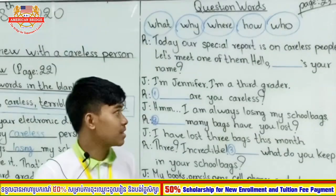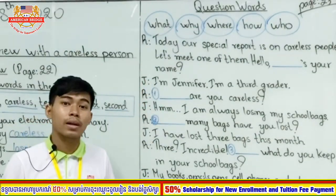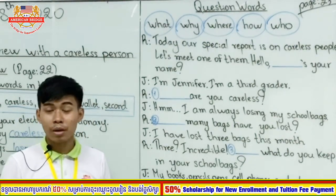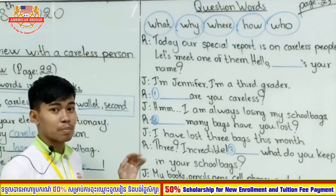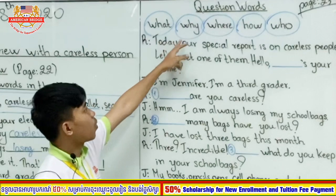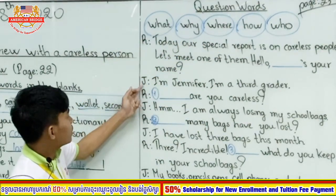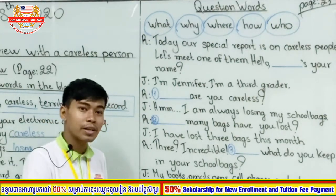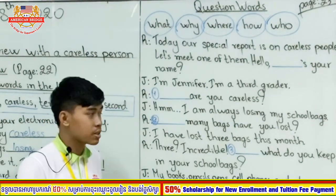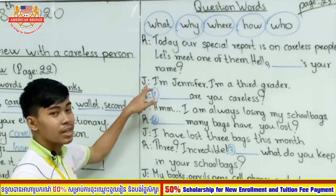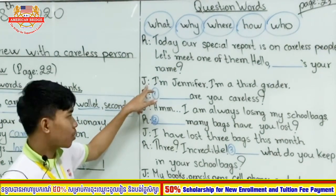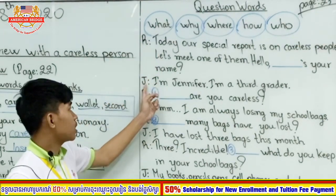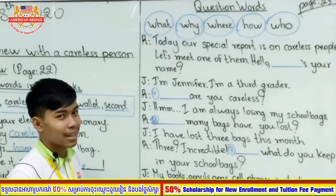Now let's go to the second exercise on page 23 — it's about question words, similar to last week's exercise but this time it's a conversation. You are given the words: what, why, where, how, and who. The letter R refers to the reporter — a person who reports news for newspapers, radio, or television — and J refers to Jennifer, one of the careless people the reporter is going to interview.